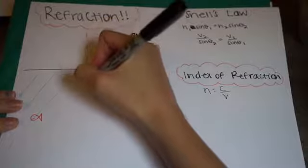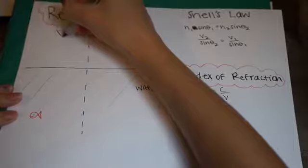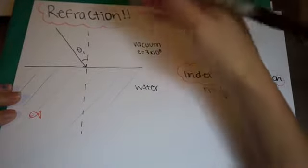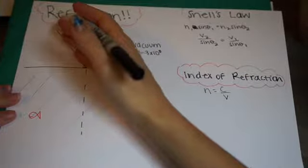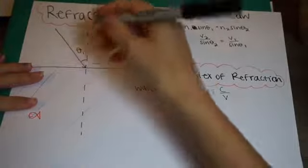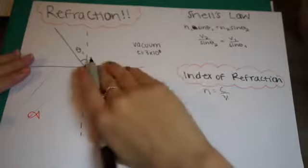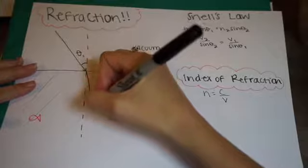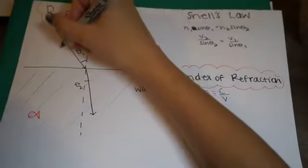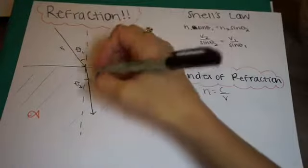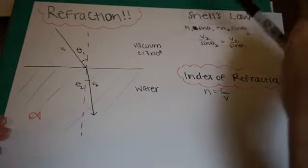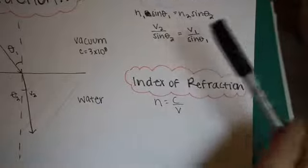First, I'm going to draw the normal line, which is perpendicular to where the two mediums meet. Let's say we have a light ray coming through the vacuum. Where it first hits, this is the angle of incidence, or theta one. When it hits the water, it's going to be going slower and it's going to change directions. When going from a less dense substance to a more dense substance, the light ray is going to slow down and refract towards the normal instead of away from it. This will be theta two, or the angle of refraction. The relationship between these two is described in Snell's law.